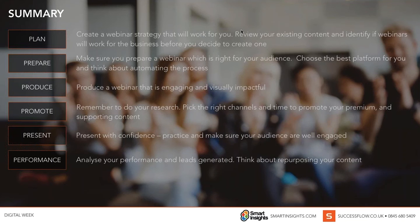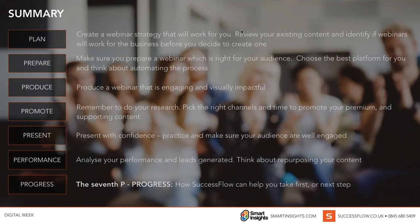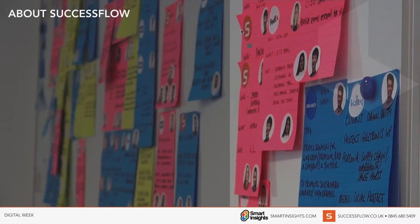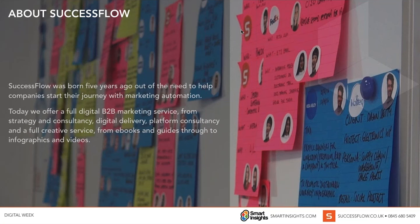Those of you good at maths might be thinking we've only had six P's — the 7th P is all about progressing and how we can help you take the next step. A little bit about us as a company: we were born about five years ago out of the need for companies to get help with their marketing automation. Today we have a full service offering around B2B — strategy and consultancy, delivery including actual campaigns and webinar campaigns, and platform consultancy around the technical and automation side. If you're considering e-books, guides, infographics, or videos, these are just some of the other service offerings we have.